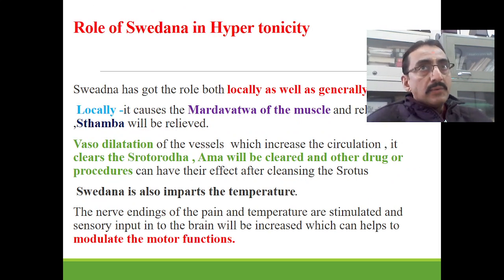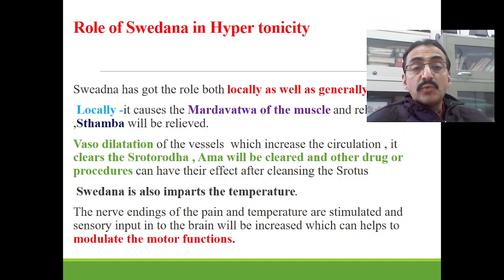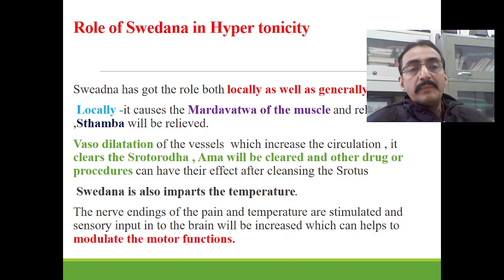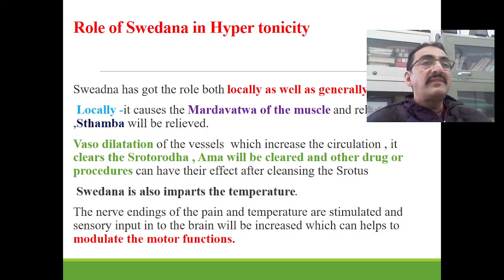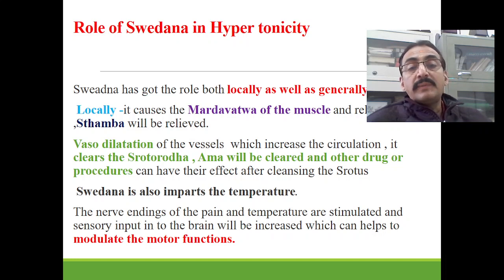The role of swedhana in hypertonicity is both local and general. Locally it causes mardhavatva of the muscle and relaxes the sthambha so that spasticity can be relieved. Vasodilation of vessels increases circulation, which clears srotorodha and ama, allowing other drugs and procedures to have their effect. Additionally, swedhana imparts heat sensation — when continuously given, this sensory input reaches the sensory cortex, stimulates nerve endings for pain and temperature, and increases sensory input to the brain, which can help modulate motor functions by formation of neuroplasticity.